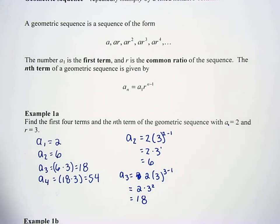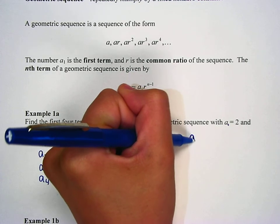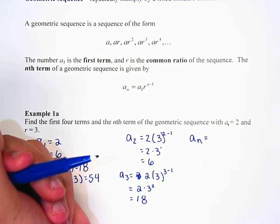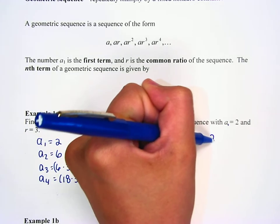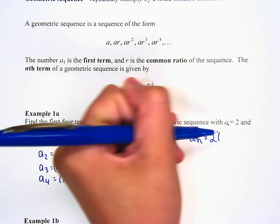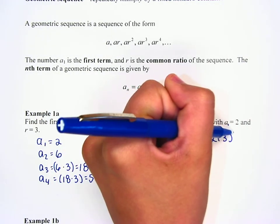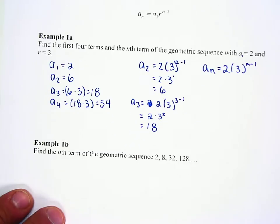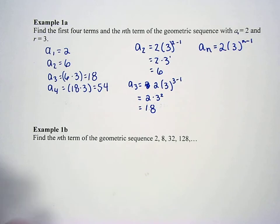Good. So for the nth term, which is the last part for this example that we got to do, we have to just write it in terms of n. So write a sub n equals, and then what's the first term? 2 times 3 to the n minus 1. Very good. Now she's starting to talk a little bit, so we're okay.